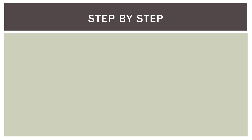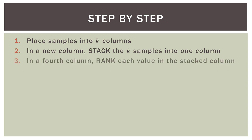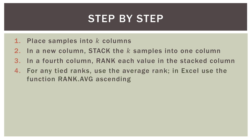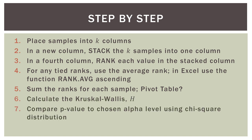So how do we do the Kruskal-Wallis test step-by-step? First, we place our samples into K columns — here three columns for three stores. In a new column we stack those K samples into one larger column. In a fourth column we rank each value in the stacked column; for tied ranks we use the average rank using Excel's RANK.AVG function ascending. Then we sum the ranks for each sample using a pivot table, calculate the H test statistic, and compare the p-value to the chosen alpha level using the chi-square distribution.